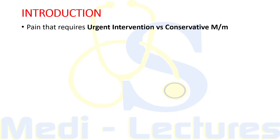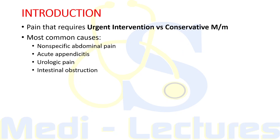Correctly interpreting acute abdominal pain can be quite challenging. Few clinical situations require greater judgment because the most severe events may be forecast by very subtle symptoms and signs. We must be able to differentiate between pain that requires urgent intervention versus pain which can be managed by conservative treatment. The most common causes of abdominal pain on admission are non-specific abdominal pain, acute appendicitis, urologic pain, and intestinal obstruction.